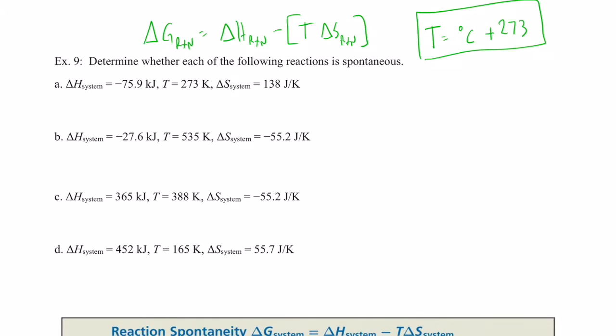All right, kiddos, let's continue with thermodynamics. We said we were going to practice some Gibbs free energy problems using this equation: delta G of a reaction is equal to delta H of a reaction minus the product of T times delta S of a reaction. Remember, we use this when we're unsure if a reaction is spontaneous.